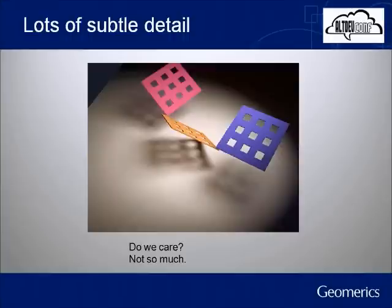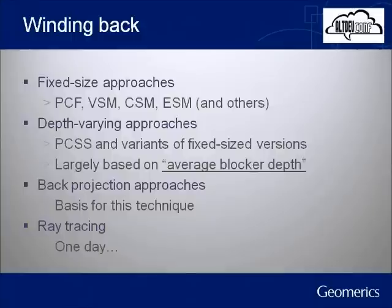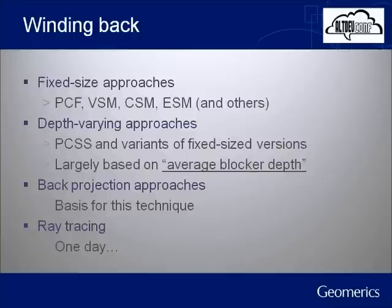Now I've presented roughly where we end up — let's run right back to the start and talk about the approaches we could use. There's a whole set of shadow techniques I'd call a fixed-size kernel approach. This includes percentage closer filtering, variance shadow mapping, convolution shadow maps, exponential shadow maps, and a whole bunch more. These are absolutely successful but fundamentally you only deal with applying a kernel in a way that gives you a constant blur everywhere — this doesn't give you contact hardening. Similarly on the opposite end of the spectrum, you can ray trace the whole thing. I'm just going to strike both these options out immediately.